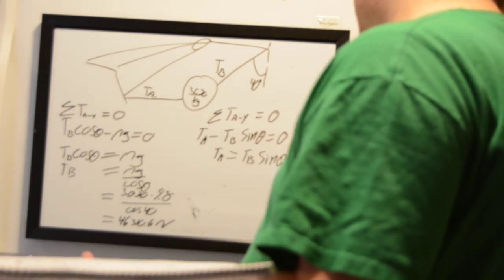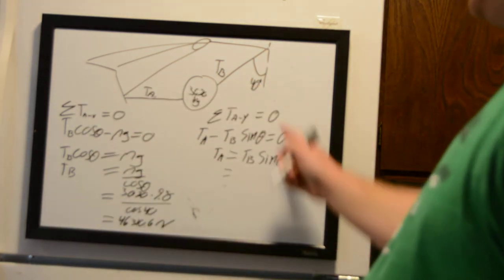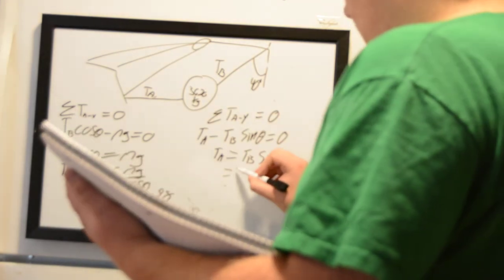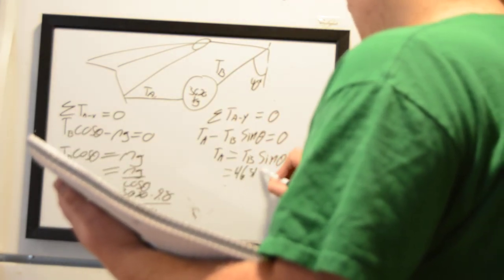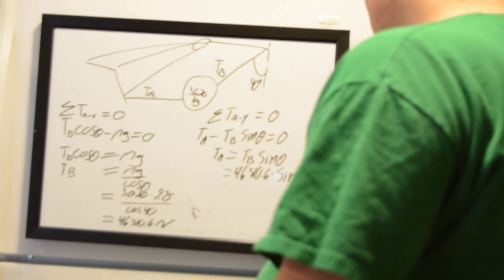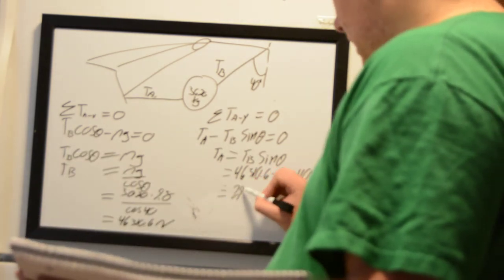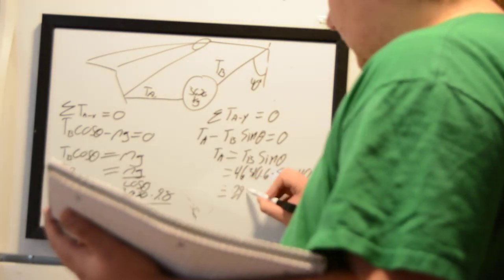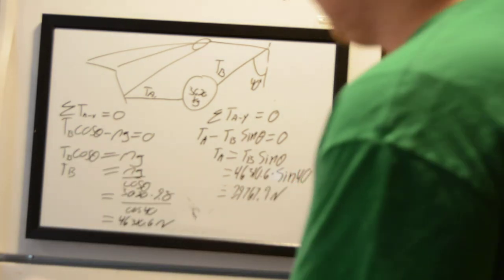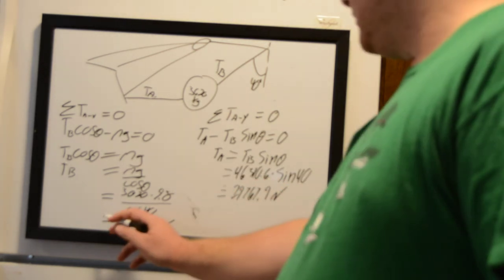So Tension A equals Tension B times the sine of theta. We know Tension B from Part A, and theta is 40 degrees, so: 46,310.6 times sine of 40 degrees equals 29,767.9 newtons. We've found both tensions using Newton's third law.